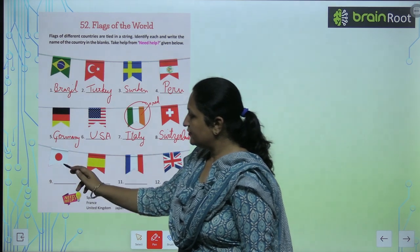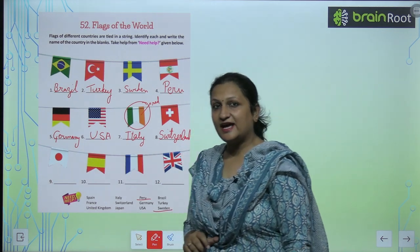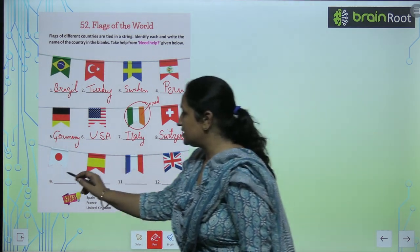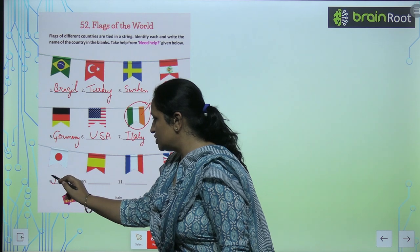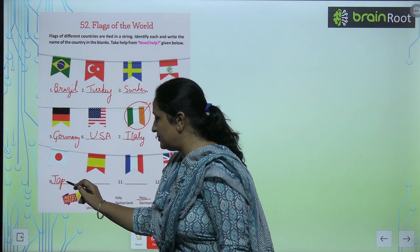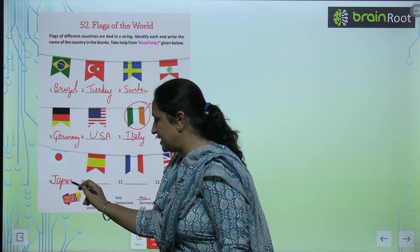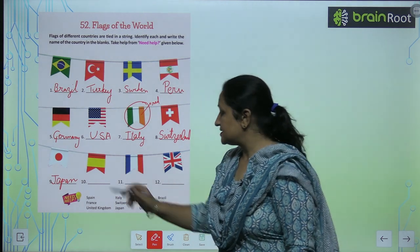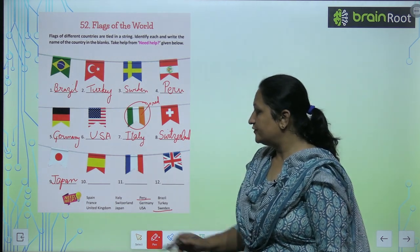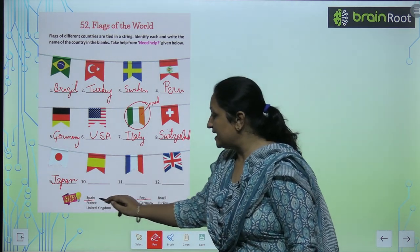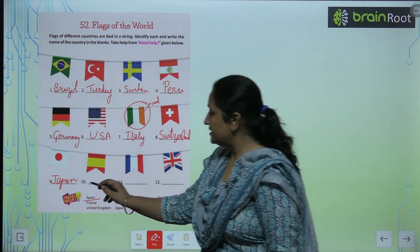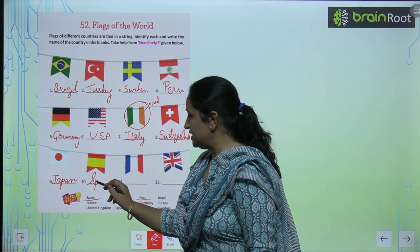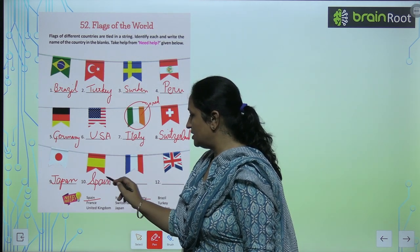Now you will write Japan here. If you see this flag — this is Japan's flag. So you will write J-A-P-A-N, Japan here. Then this is the flag of Spain. So you will write Spain, S-P-A-I-N.